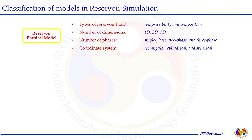The physical model developed for the reservoir can have different features. Classification of models in reservoir simulation can be done by type of reservoir fluid — slightly compressible, compressible, or incompressible — and what compositions are present or injected. The dimension of the reservoir can be solved as a 1D, 2D, or 3D problem. Number of phases present — single phase (oil only), two phases (oil and water), or three phases (oil, water, and gas) — can also be specified, along with the coordinate system.